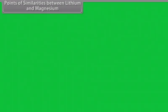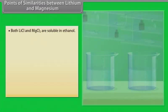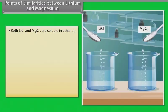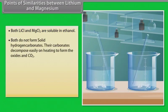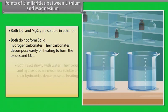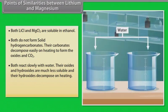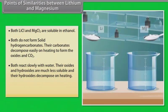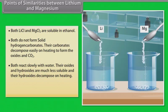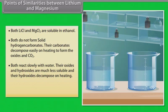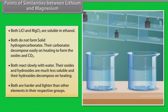Points of similarities between lithium and magnesium. Both LiCl and MgCl₂ are soluble in ethanol. Both do not form solid hydrogen carbonates. Their carbonates decompose easily on heating to form the oxides and CO₂. Both react slowly with water. Their oxides and hydroxides are much less soluble, and their hydroxides decompose on heating. Both are harder and lighter than other elements in their respective groups.